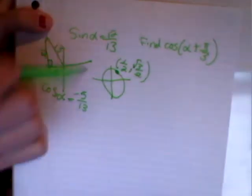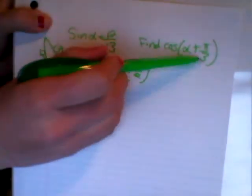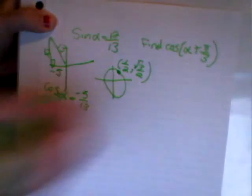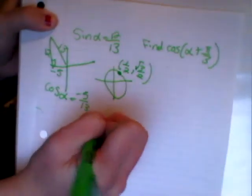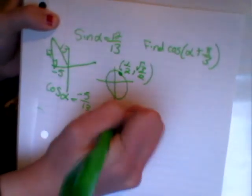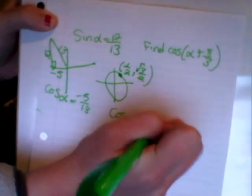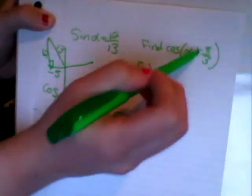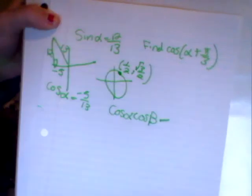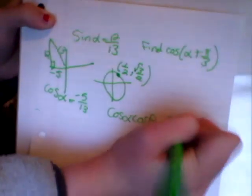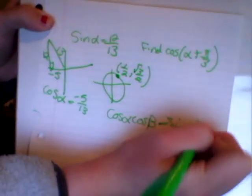Since we're finding the cosine of alpha plus pi over 3, it's going to be cosine alpha cosine beta, change the sine. Since it was addition, it's going to be subtraction: sine alpha times sine beta.